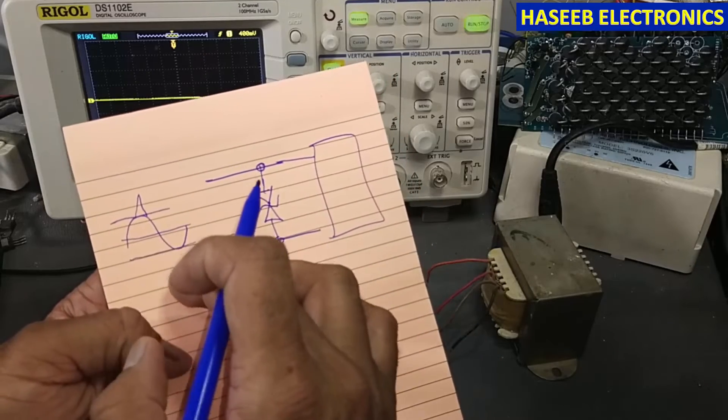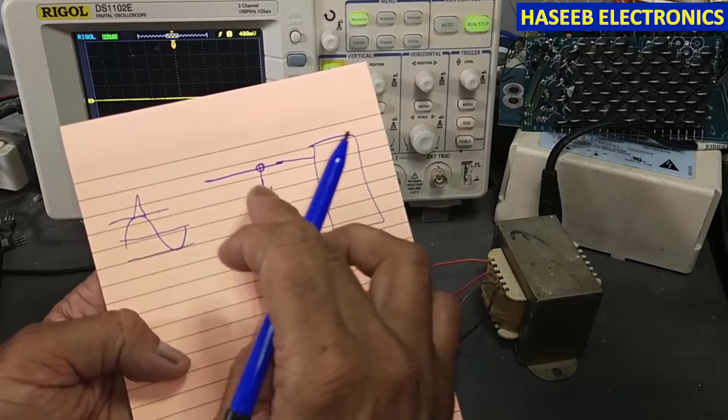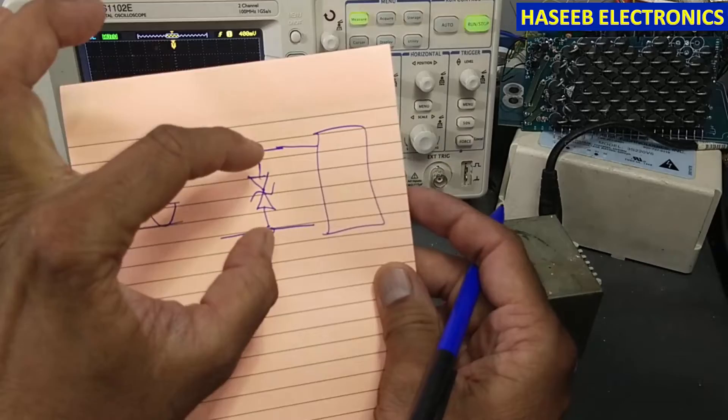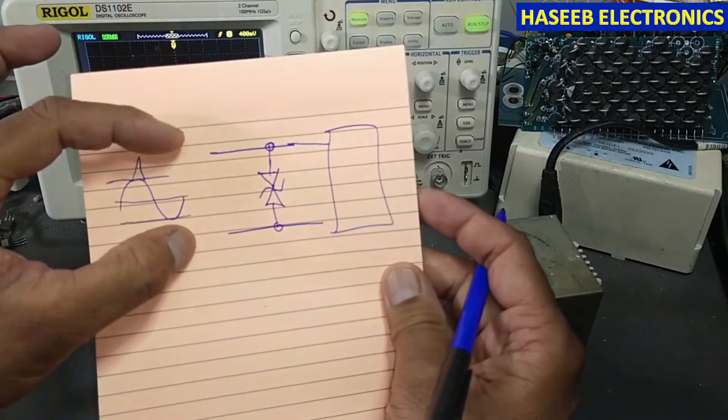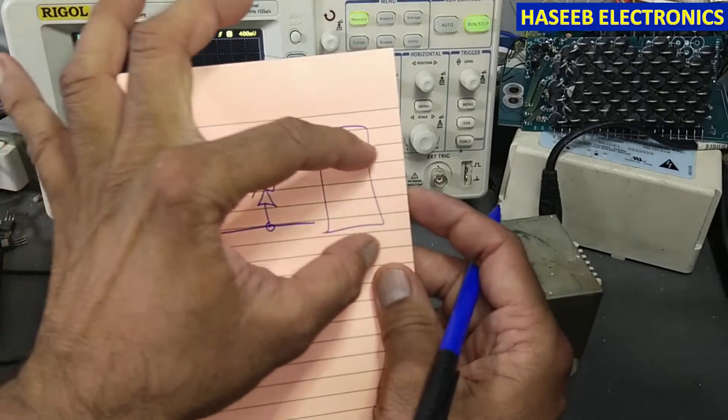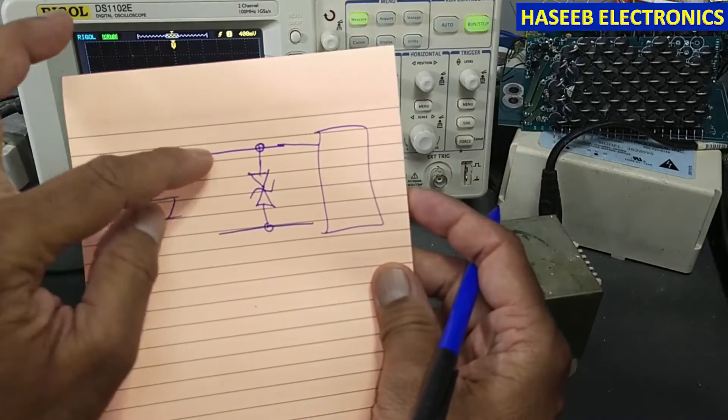We can say we are placing a cutter here. It will allow just only 22 volts to enter the system. The rest it will cut down and give the easiest path through its internal circuit.